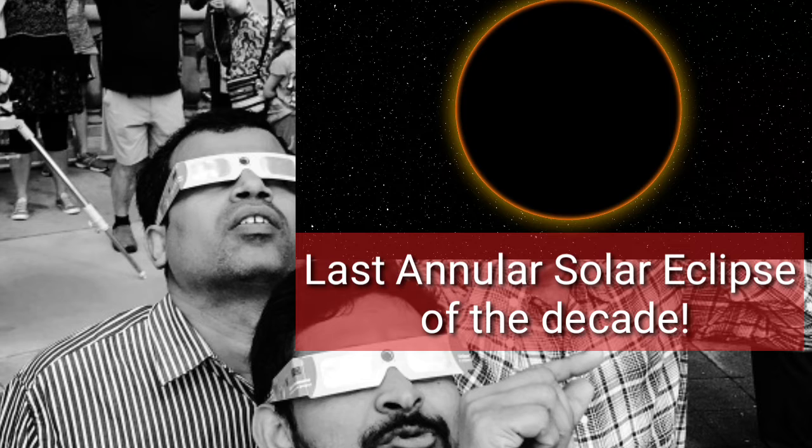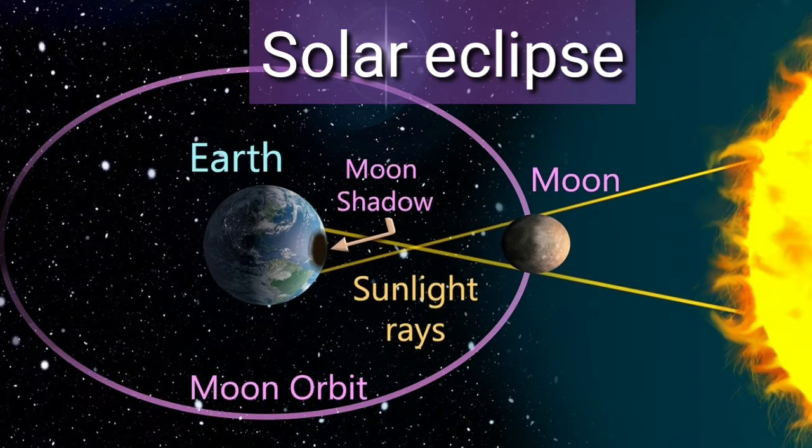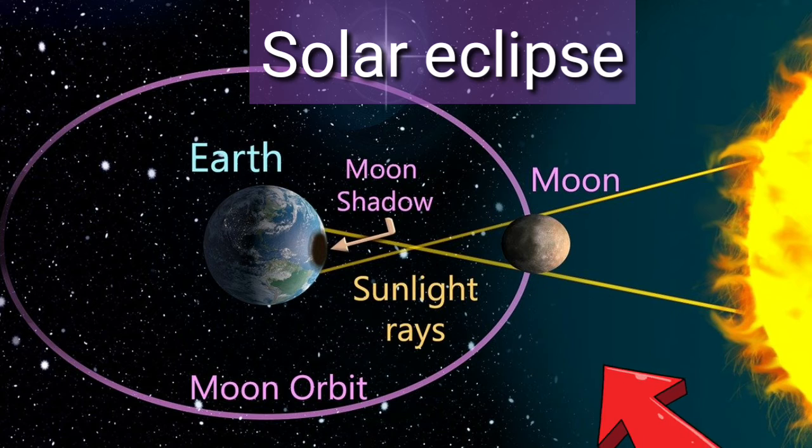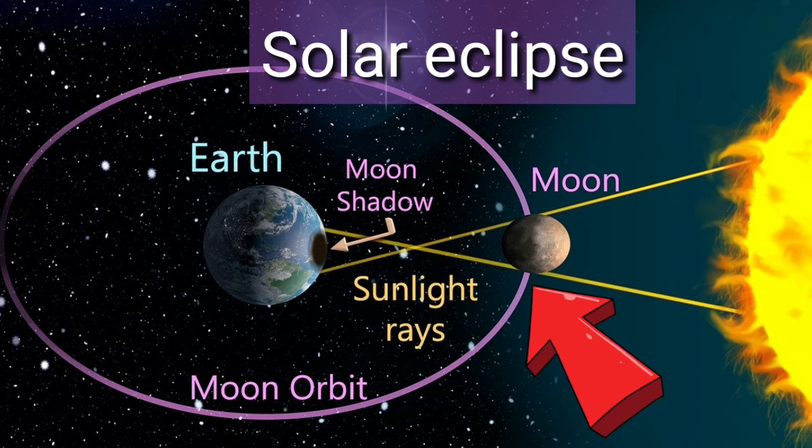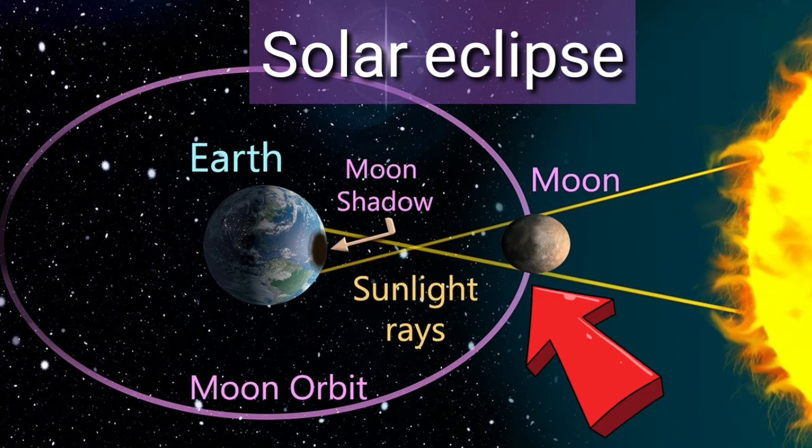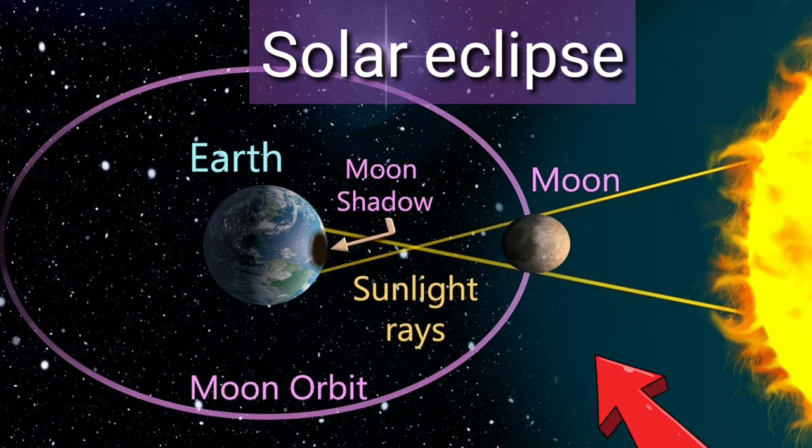But before proceeding to the annular solar eclipse, let's understand the solar eclipse. A solar eclipse occurs when the moon casts its shadow on the Earth, blocking the sunlight. This happens when the sun, moon, and Earth are aligned in such a way that the moon comes between the sun and Earth.